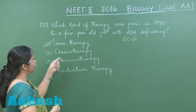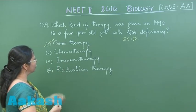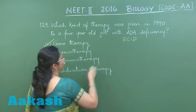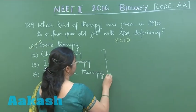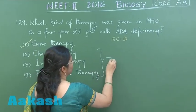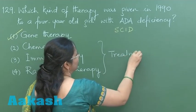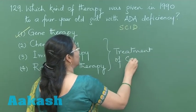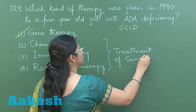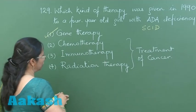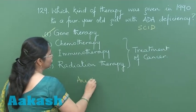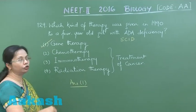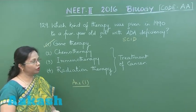The remaining three options — chemotherapy, immunotherapy, and radiation therapy — are used for cancer treatment. Therefore, our correct answer is option number 1. Let's move on to question 130.